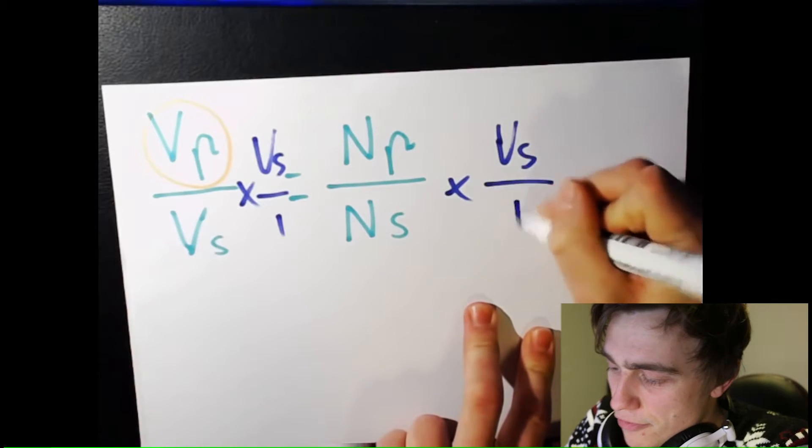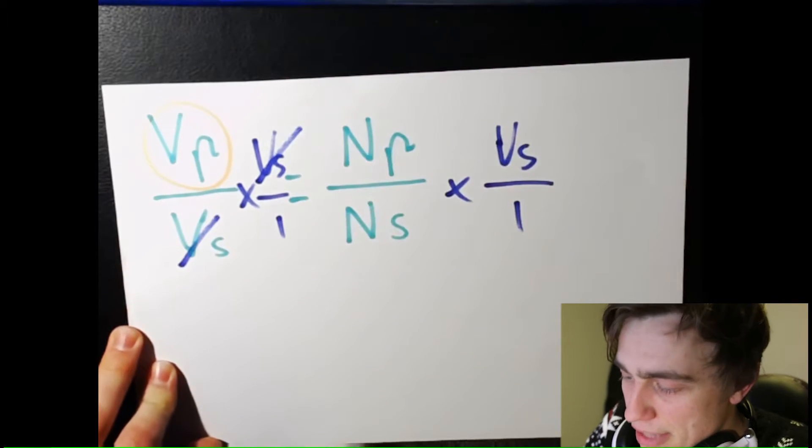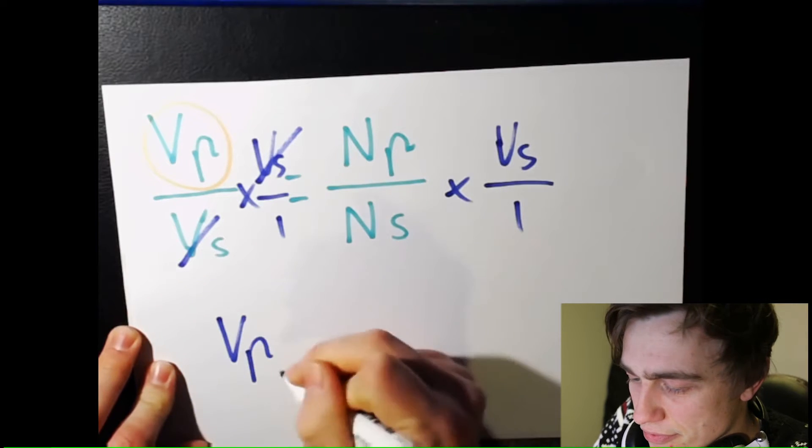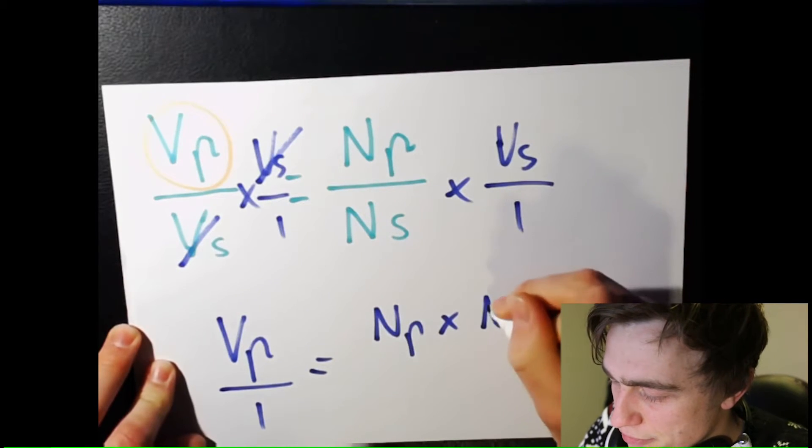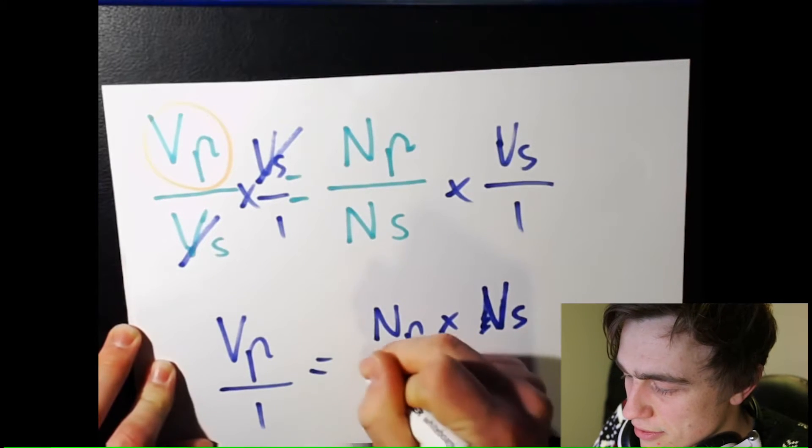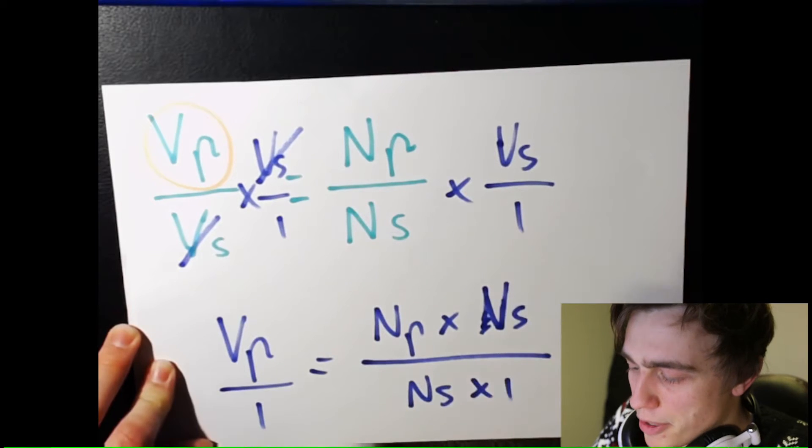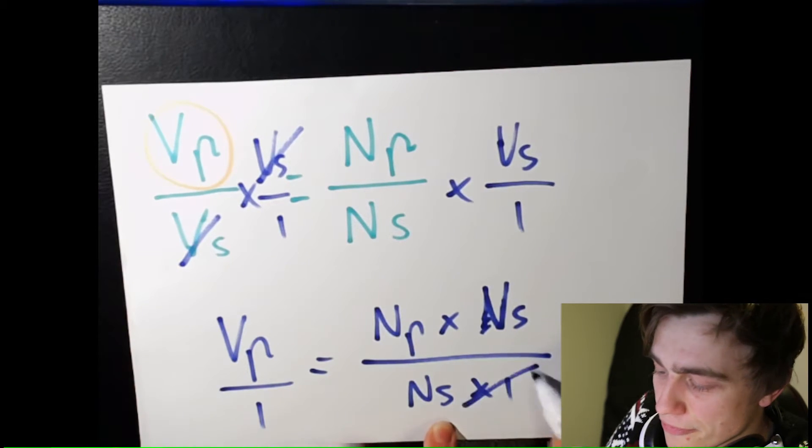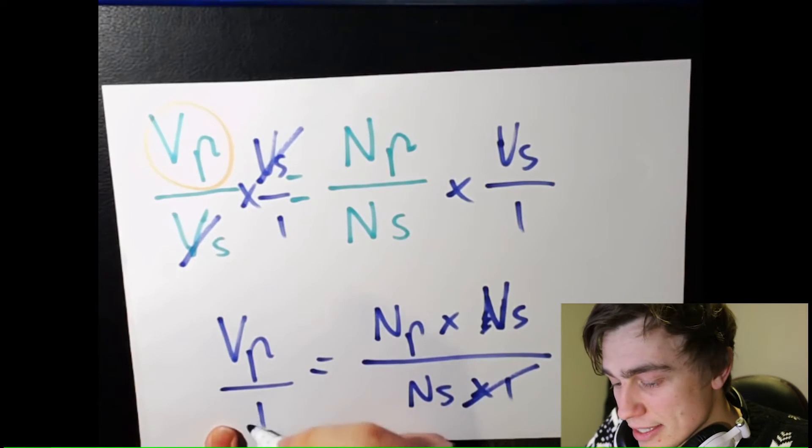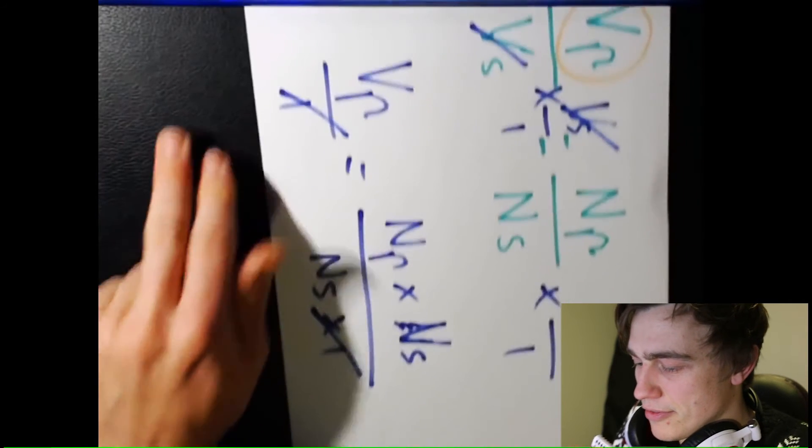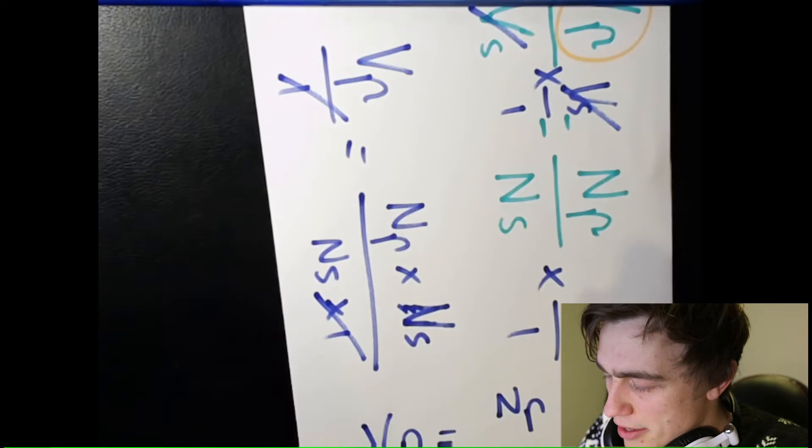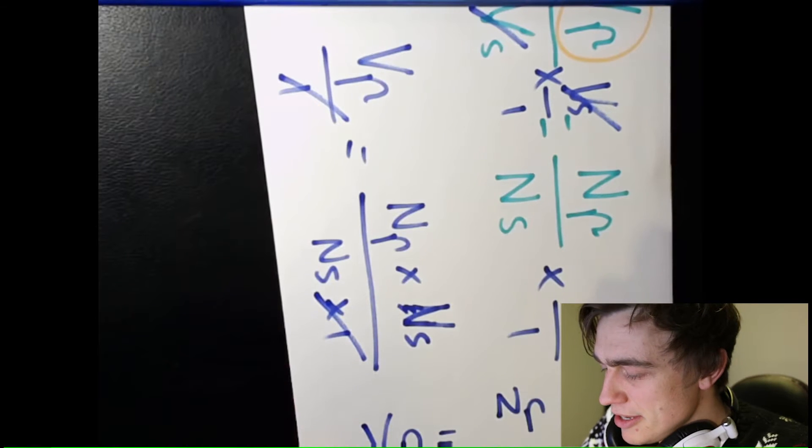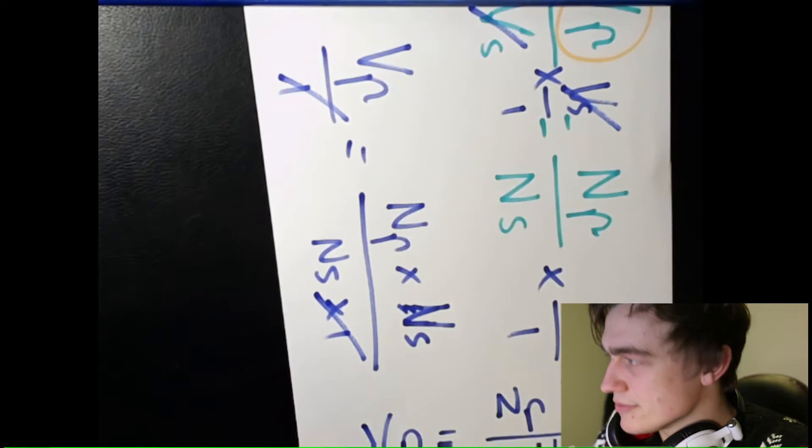So we have to get rid of the Vs by timesing Vs over 1. Do it on the other side. Vs over 1. Vs cancels. And we're left with Vp over 1 equals Np times... Oh, that's a V. That's not good. Vs... times by 1. Vs times by 1 is going to be itself. Vp divided by 1 is itself. We are left with... I'll draw it over here. Vp equals Np... Oh, I did it again. I'm an idiot. You get it. Over Ns. There's our formula.